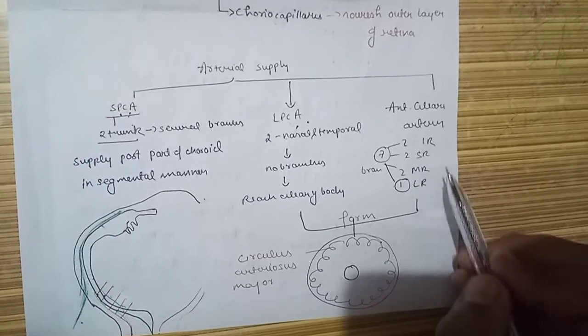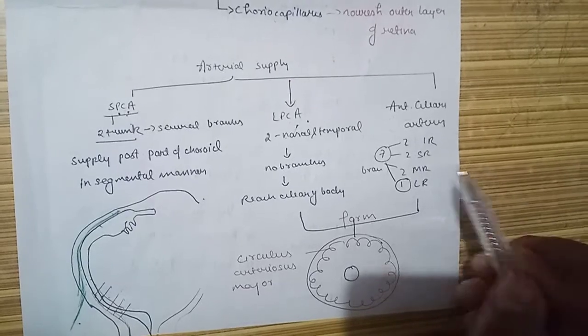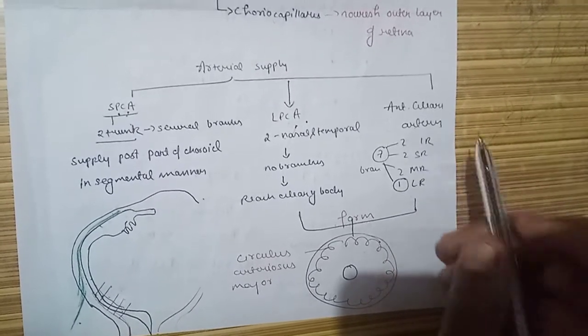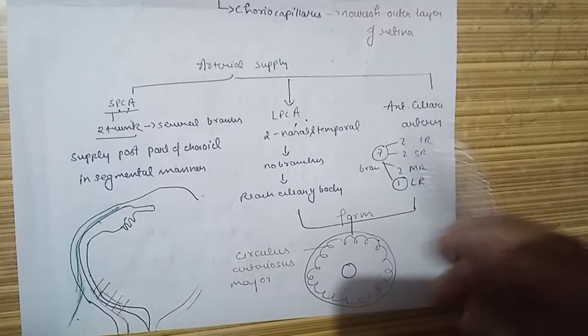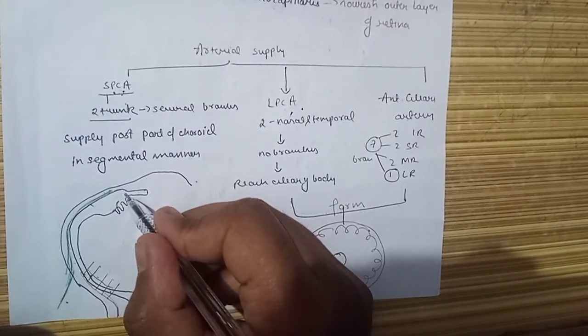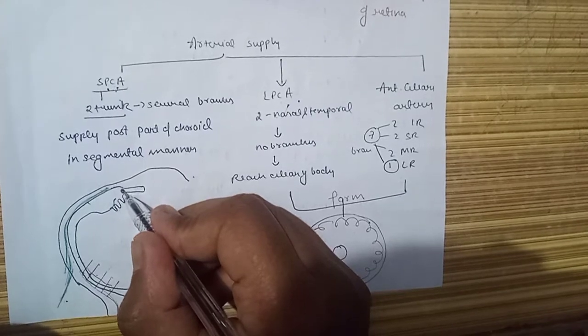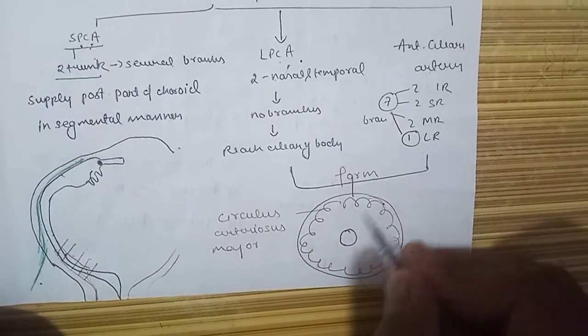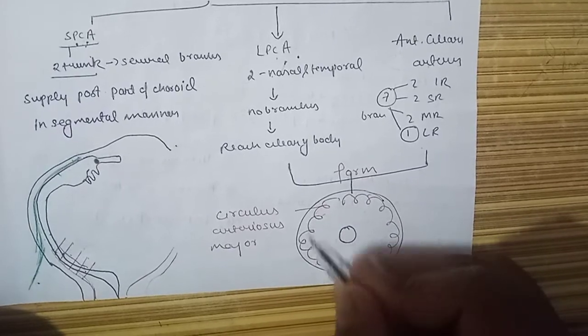The anterior ciliary artery, along with the long posterior ciliary artery, forms a plexus in the iris root. This plexus is what is shown here in the iris root.